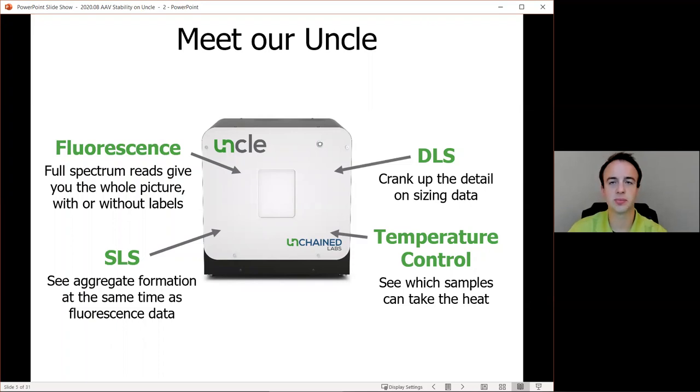DLS is dynamic light scattering and allows for detailed measurements of size and size distribution. These three detection methods can be operated isothermally, at room temp, or across a heat ramp designed to thermally stress samples and see which ones can take the heat. UNCLE is able to deliver results in aggregation with two different looks at viral capsid stability in about two to three hours with nine microliters of sample for up to 48 samples at a time.